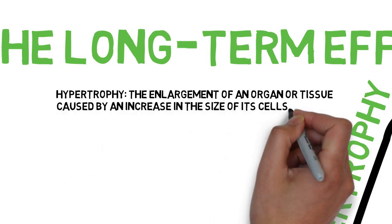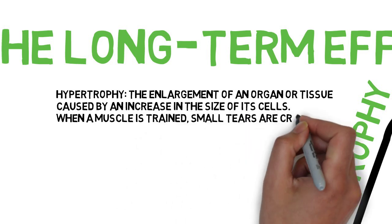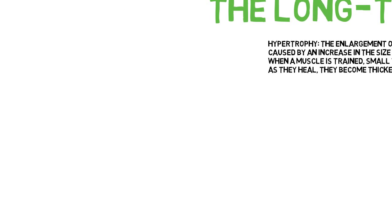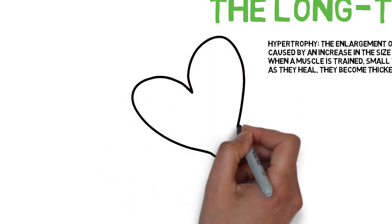Hypertrophy is the enlargement of an organ or tissue caused by an increase in the size of its cells. When a muscle is trained, small tears are created; as they heal, they become thicker and increase in size.